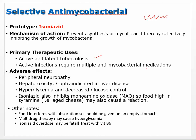Active infections require multiple antibacterial medications. Adverse effects of isoniazid include peripheral neuropathy — it can cause some nerve damage — and hepatotoxicity, so it's contraindicated in people with liver disease. It also causes hyperglycemia and decreased glucose control, which should get your attention for diabetes — this drug has effects in multiple areas.